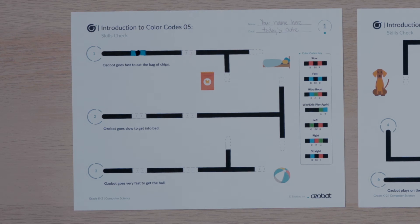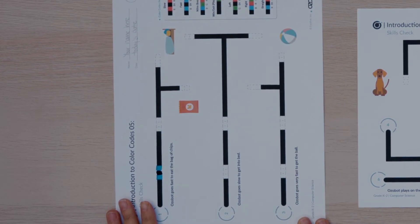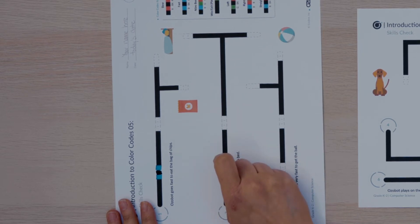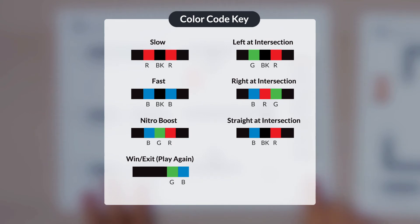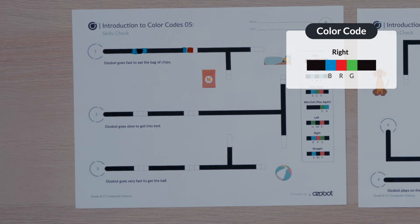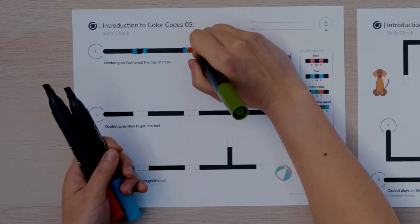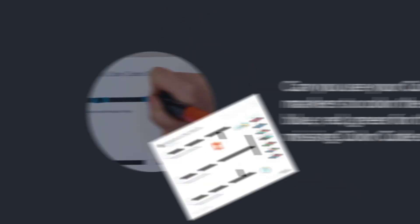Are you ready to figure out the second missing color code in the pathway? The second missing color code will program Ozovot to move to the bag of chips. I am going to turn my paper so it's easier for me to tell my right from my left. In order for Ozovot to get to the bag of chips, does it need to move straight or turn right? You got it — Ozovot will need to turn right to get to the bag of chips. Look at the color codes key. Do you see a color code to program Ozovot to turn right? Well done. The right at intersection color code will program Ozovot to turn right at the intersection. I will draw the color sequence blue, red, green for the second missing color code on path 1. Can you use your color code markers to color the sequence blue, red, green for the second missing color code on path 1?